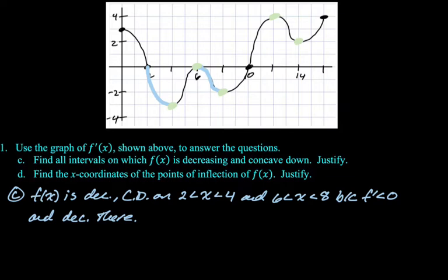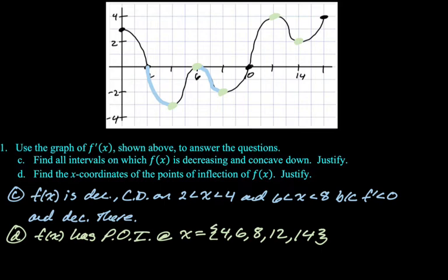And usually this question would say on the open interval from 0 to 16. I wrote the problem, and you know, I do my best, but I don't always write perfect problems. So we're going to go with points of inflection at 4, 6, 8, not 10, 12, and 14, and my reasoning will be f prime has relative extrema. So let's list them, and then we will say because f prime has relative extrema at those points, or there.